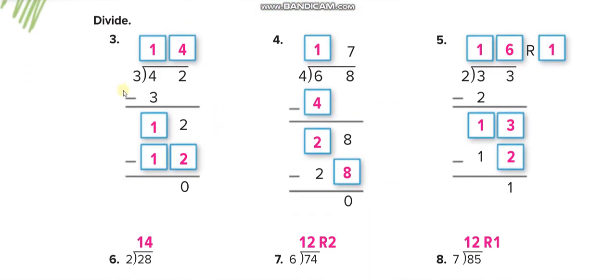Let me show you the first one. 4 divided by 3. 3 times 1 is 3. 4 minus 3: 1. Bring the 2 down. And 3 times 4: 12. 3 times 4: 12, no remainder. In this one we have remainder.